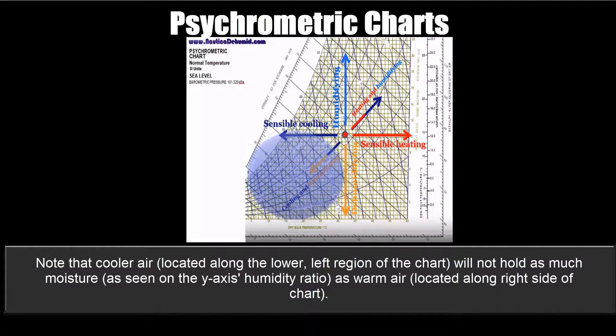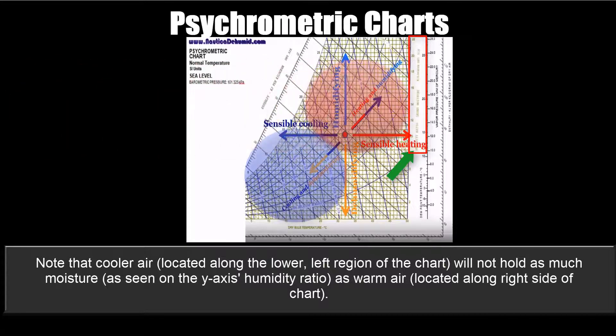Note that cooler air, located along the lower left region of the chart, will not hold as much moisture, as seen on the y-axis humidity ratio, as warm air, located along the right side of the chart.